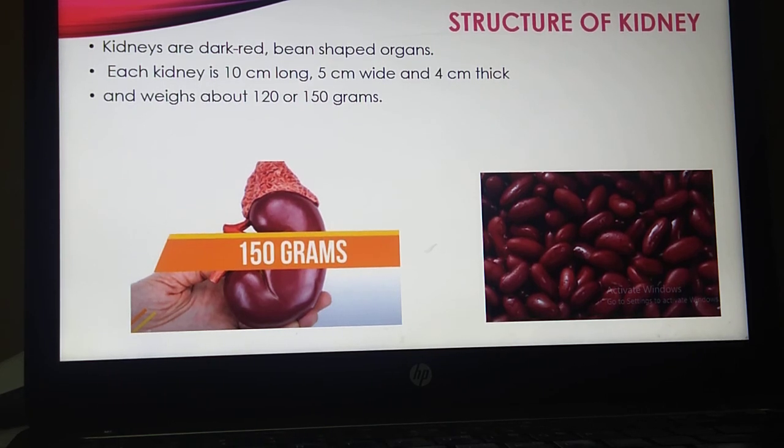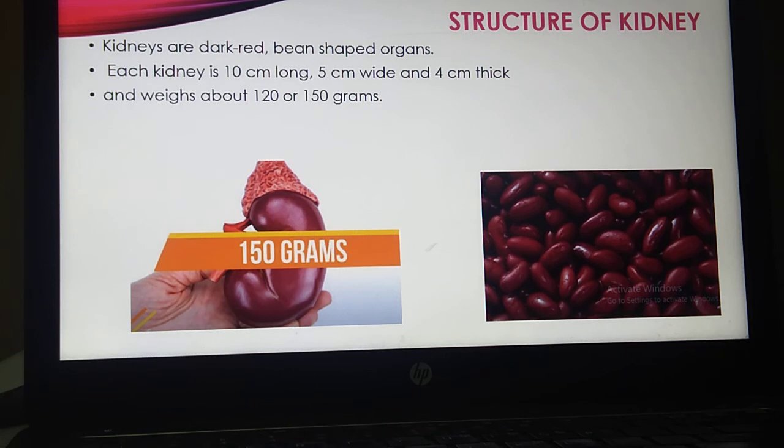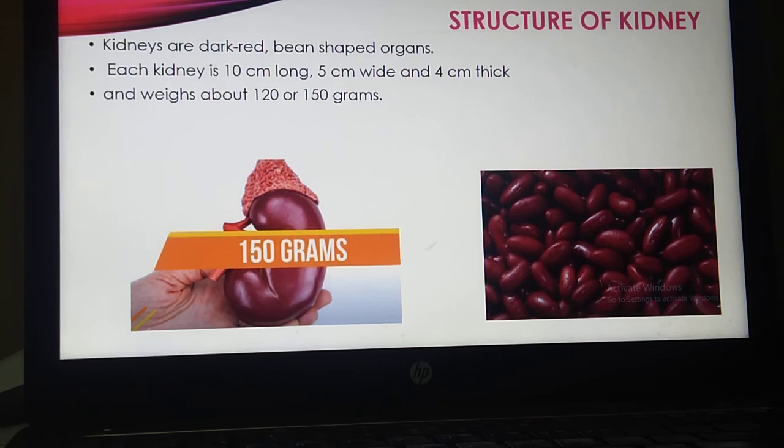Moving towards the structure of kidney, basically kidney is the dark red bean-shaped organ as shown in figure. Each kidney is 10 centimeters long, 5 centimeters wide, and 4 centimeters thick, and weighs about 120 or 150 grams.